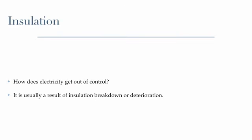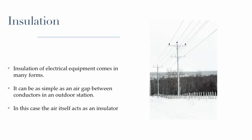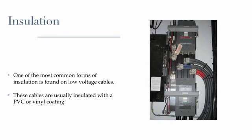How does electricity get out of control? It is usually a result of an insulation breakdown or deterioration. Insulation of electrical equipment comes in many forms. It can be as simple as an air gap between conductors in an outdoor station. In this case, the air itself acts as an insulator.